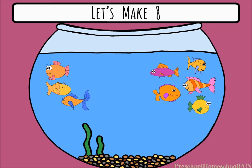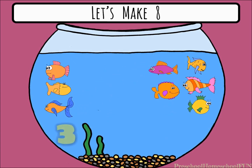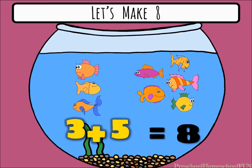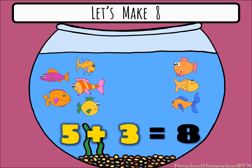If three fish swim to the side, now we have three plus five equals eight. And if those groups switch places, we have five plus three equals eight.